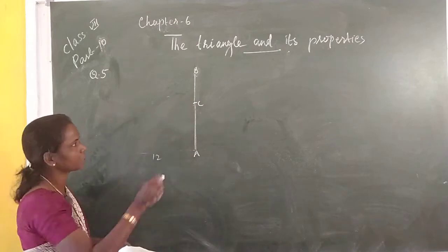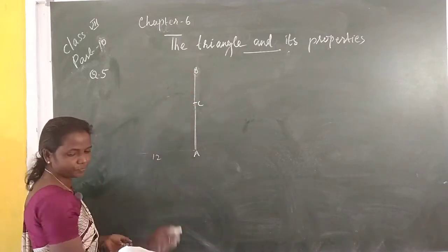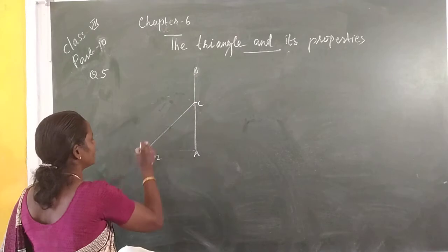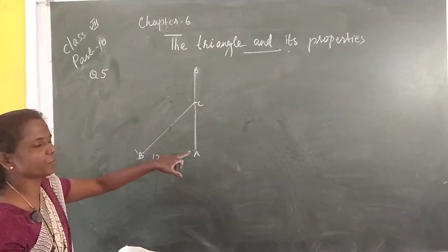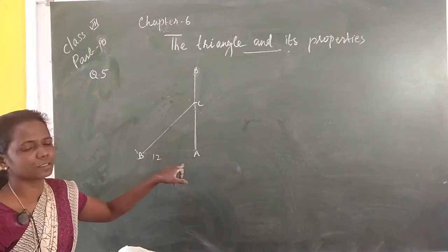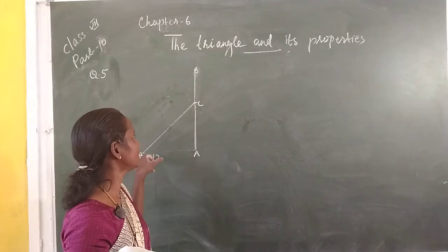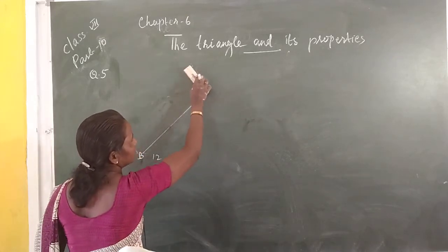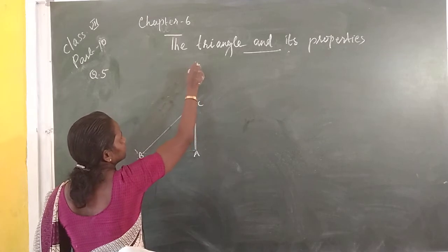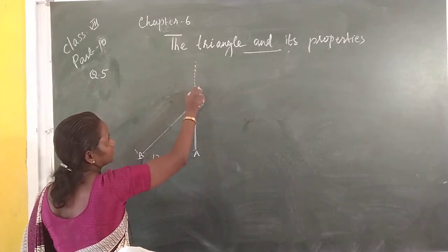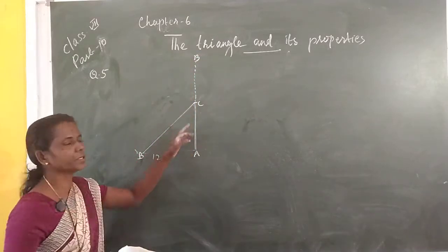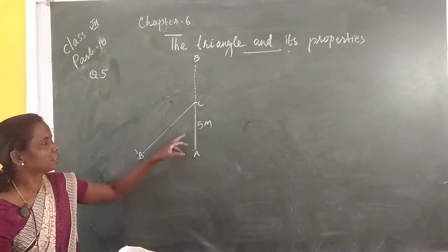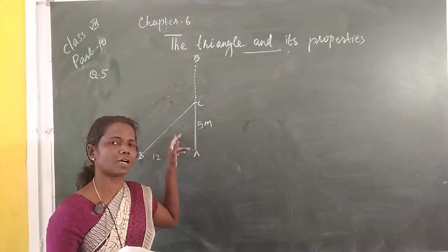This top touched the ground — B touched the ground. This point B touched the ground, and the distance is 12 meters from the base of the tree. So B broke and touched the ground at the ground level. This distance is 5 meters.